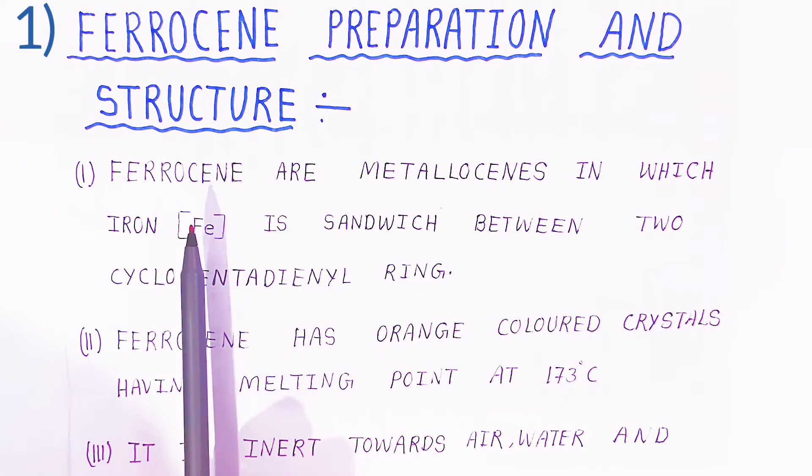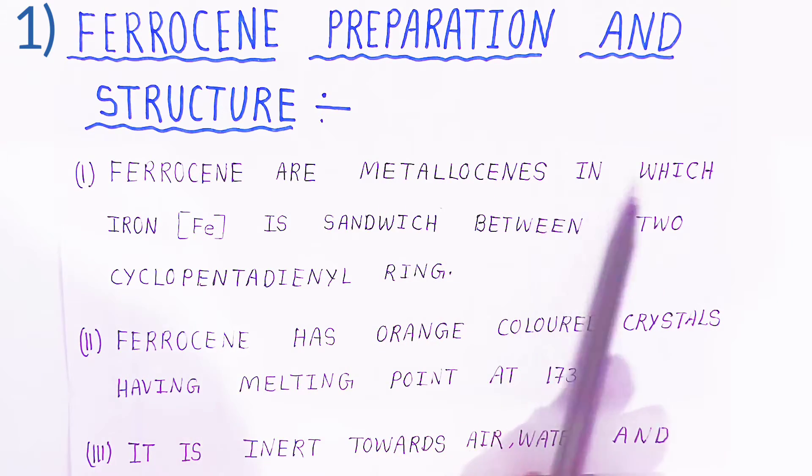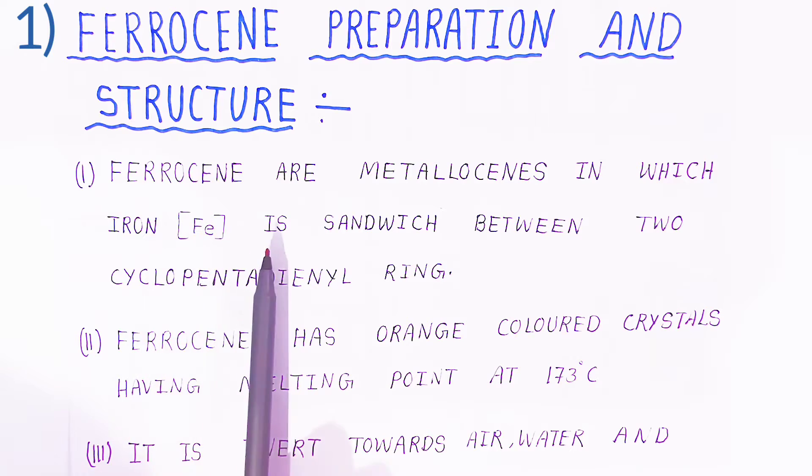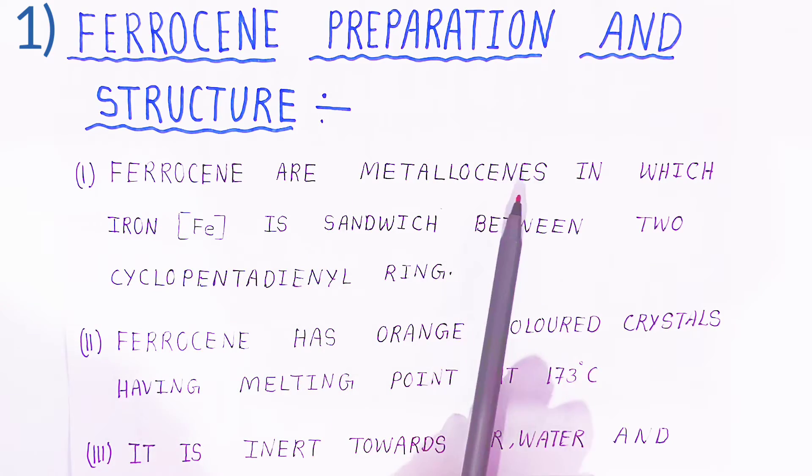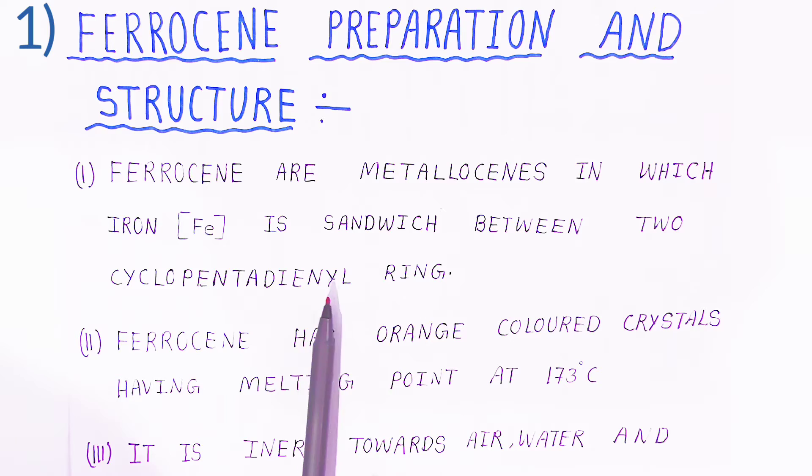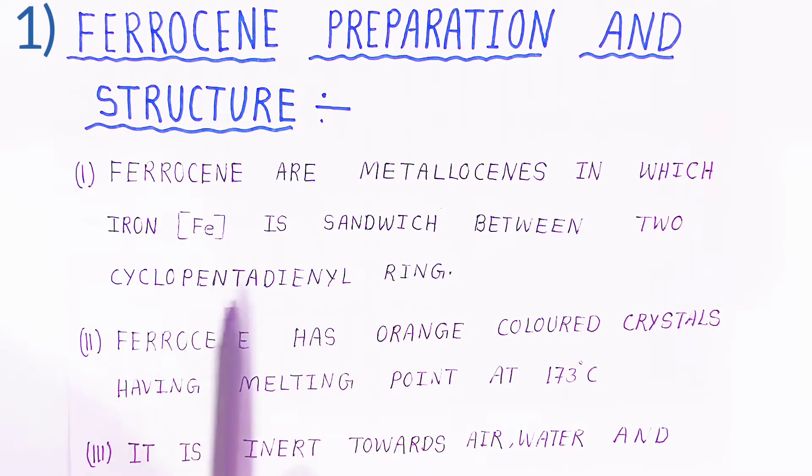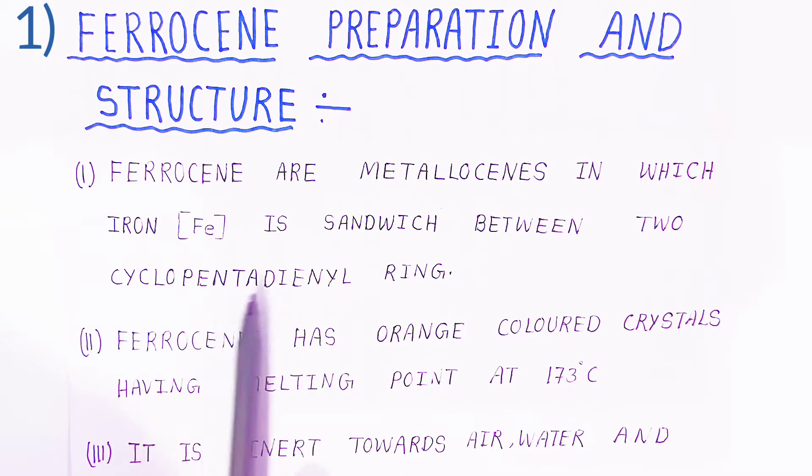Ferrocene, also called metallocene, is a compound in which iron (Fe) is sandwiched between two cyclopentadienyl rings. One iron atom is positioned between the two cyclopentadienyl rings.